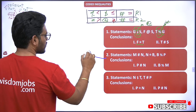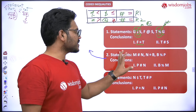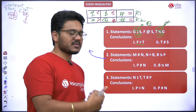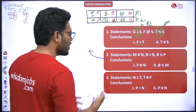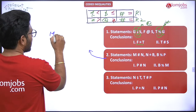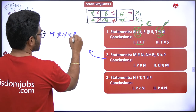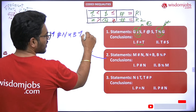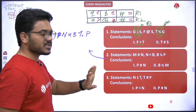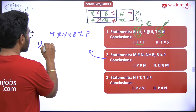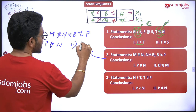Now let's look at question two. Unlike question one, this is straightforward — no twisting, no need to change symbols. You can merge the statements directly. How quickly you can do this depends on practice. Once merged, we check the conclusions.